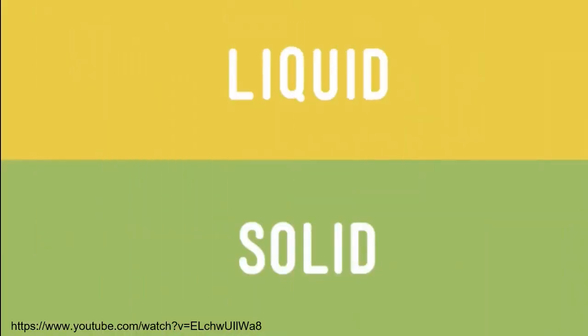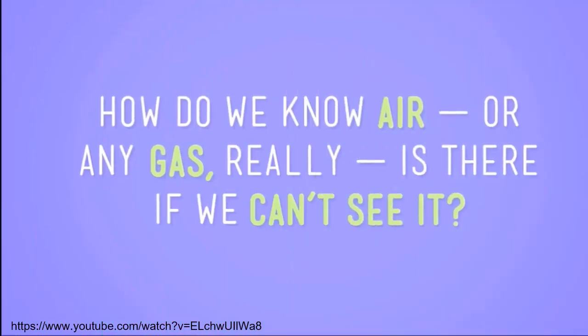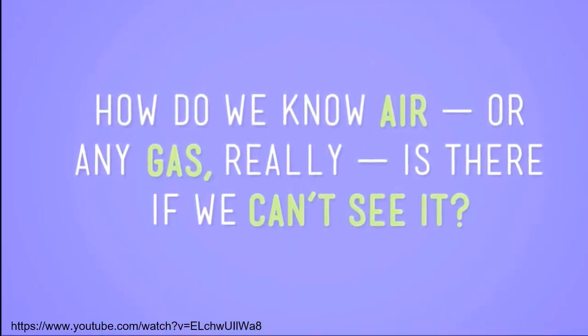Sometimes matter can't be seen or felt, but it's there — like the air we breathe. Air is an example of gas, the third main state of matter. You're probably thinking: how do we know air, or any gas, is there if we can't see it? Well, we can prove it by doing an experiment. Science!